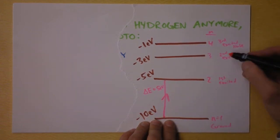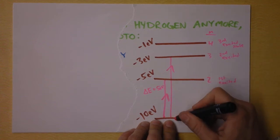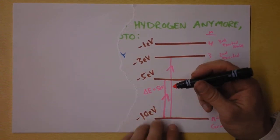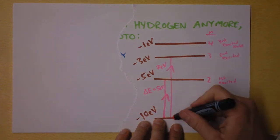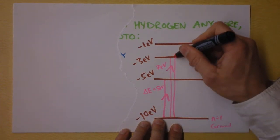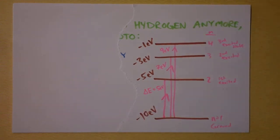It could also go from the ground state to the second excited state like that. And that transition is 7 electron volts. And it could go from there all the way up here, and that transition would be 9 electron volts. Those are the energies right there that we could get.